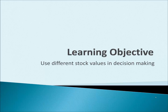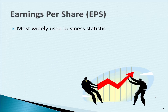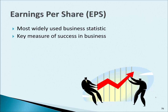The next learning objective is to use different stock values in decision making. First, we'll talk about Earnings Per Share, abbreviated EPS. It's the most widely used business statistic and people use it to measure a business's success. Any company that's publicly traded must release their earnings per share, balance sheet, statement of cash flows, and income statement once a quarter. People on Wall Street are trying to forecast these numbers before they're released all the time, so the Earnings Per Share number is very key.